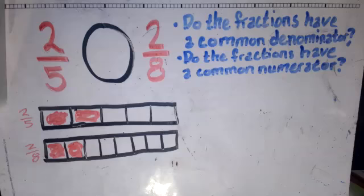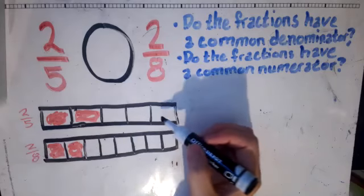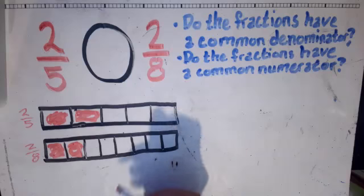If we have common numerators, the larger fraction will be the one with the smaller number in the denominator. And the reason for that is it's about how much we're splitting something into.